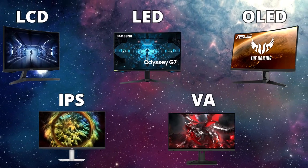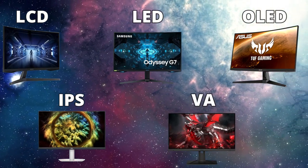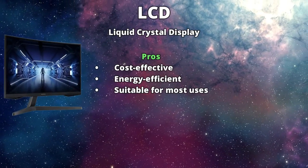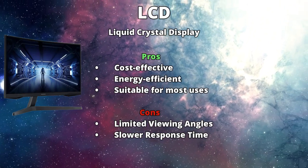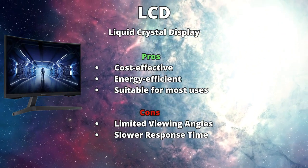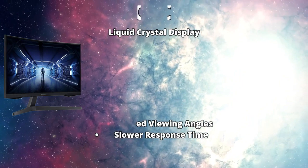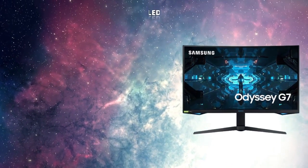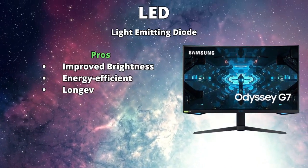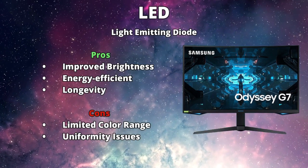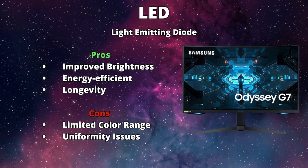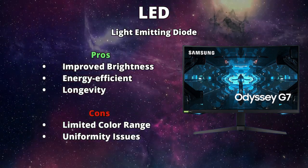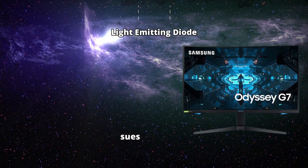Let's explore the various panel technologies, along with their pros and cons. LCD — Liquid Crystal Display — is cost-effective; LCDs are relatively affordable to manufacture, making them widely available at various price points, though they may suffer from color and contrast shifts when viewed from extreme angles. LED — Light Emitting Diode — offers improved brightness, energy efficiency, and longevity, but some LED displays may struggle with achieving deep blacks and true color reproduction, and LED backlighting may cause uneven brightness across the screen.